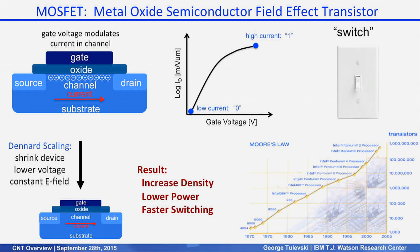These three things — increased density, lower power, and higher performance — are what actually makes Moore's law possible, shown in the bottom right as an exponential increase in number of devices over time. Up until about 2005, we've been able to do this without changing the materials at all: the channel is silicon, the oxide is silicon oxide, the contacts are doped silicon or polysilicon, and that hasn't changed for that 30-year time period.